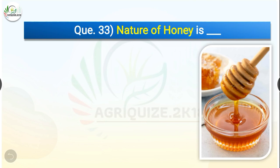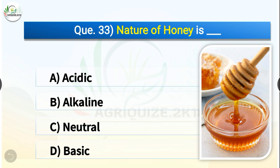Question number thirty-three: Nature of honey is dash. The options are acidic, alkaline, neutral, or basic. The correct answer is option A — acidic. Nature of honey is acidic. Honey is acidic in nature as the pH of honey ranges from 3.4 to 6.1, with an average pH of 3.9.